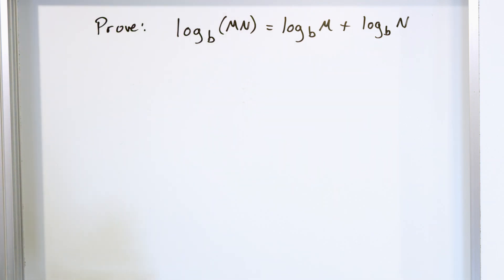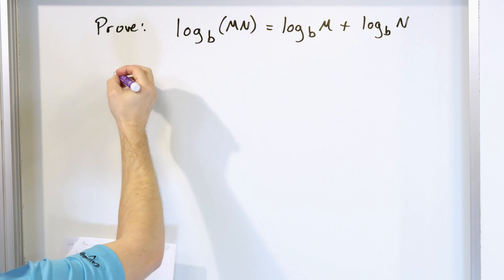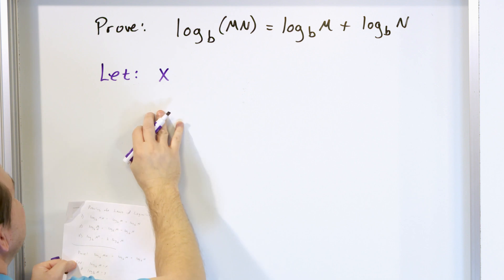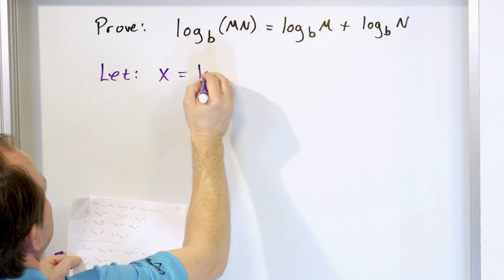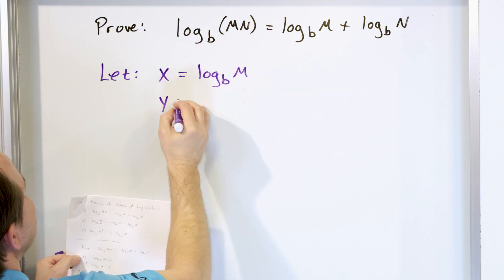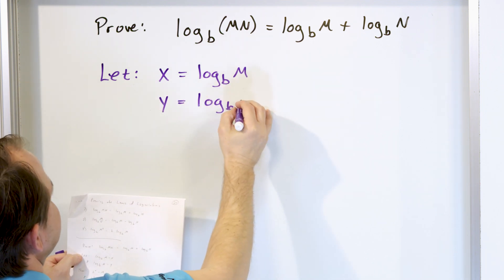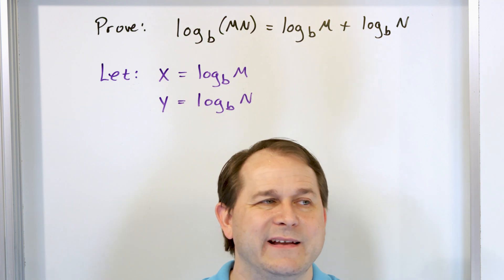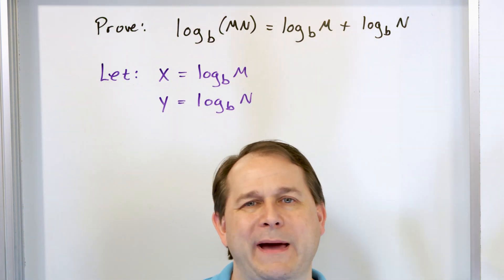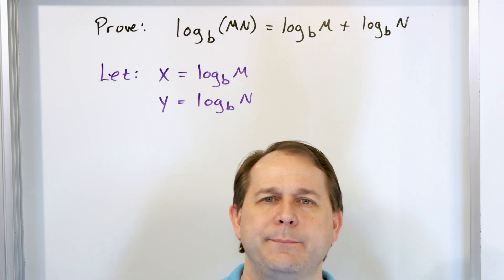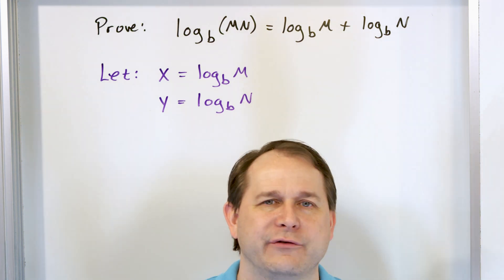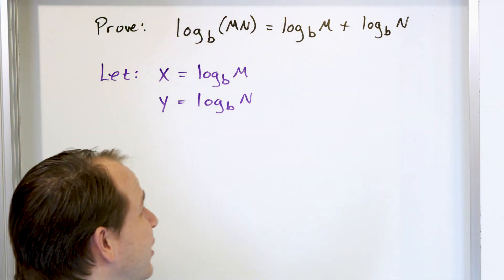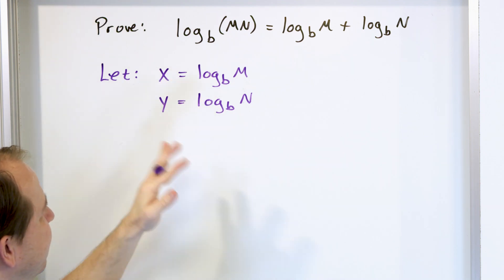In order to do this, we want to add these guys together, so let's let the following things be true. Let x equal log base b of m, and let y equal log base b of n. You might ask why I'm introducing new variables — that happens all the time in proofs. A proof is like a blank canvas; I can do what I want as long as it's mathematically legal.